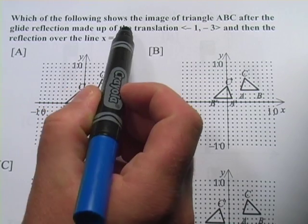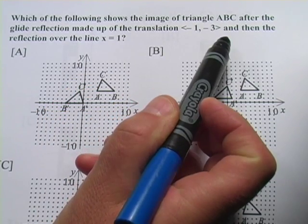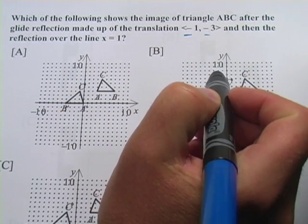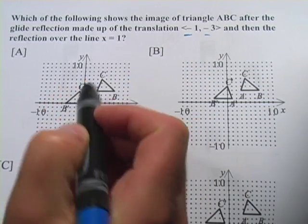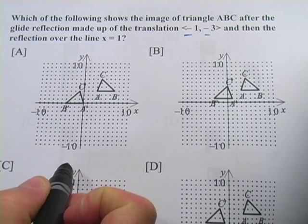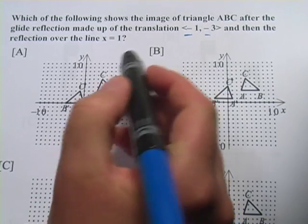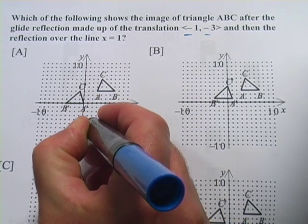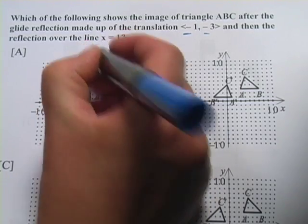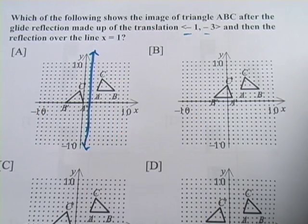So let's look at this. Which of the following shows the image of triangle ABC after the glide reflection made up of a translation negative one, negative three? And then the reflection over the line x equals one. And the first thing I like to do is just draw in that line of reflection. x equals one is a vertical line. It's hard for me to draw straight from this angle. So there's x equals one, more or less.